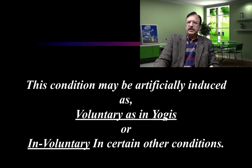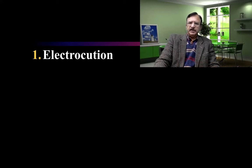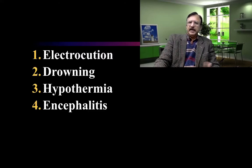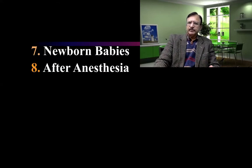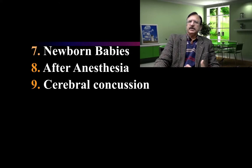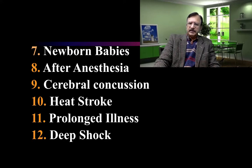This condition may be artificially induced — voluntarily as in yogis, or involuntarily in certain other conditions. The involuntary, unnatural conditions in which suspended animation can be generated include electrocution, drowning, hypothermia, encephalitis, overdoses of sedatives, barbiturate coma, certain newborn babies after anesthesia, cerebral concussion, heat stroke, prolonged illness, and deep shock.